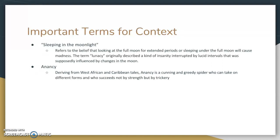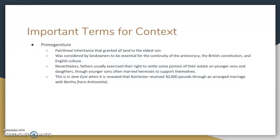Another term is Anansi, which comes up once in the novel. Derived from West African and Caribbean tales, Anansi is a demigod — a cunning and greedy spider who can take on different forms and who succeeds not by strength but by trickery. Another term you should know is primogeniture, which shows up with the husband in this novel. This is patrilineal inheritance where all that a father owns is passed to the eldest son. It was considered, especially in England, as essential for the continuity of aristocracy, the British constitution, and English culture. Typically fathers did settle some portion of their estate for younger sons and daughters, but younger sons often married heiresses to support themselves. This is obvious in Jane Eyre where it's revealed that Rochester receives 30,000 pounds through an arranged marriage with Bertha — and here in Wide Sargasso Sea, that's Antoinette.